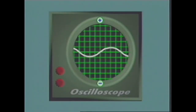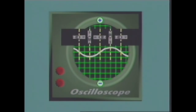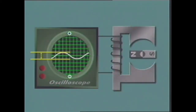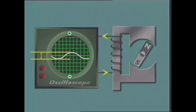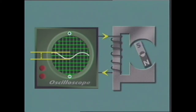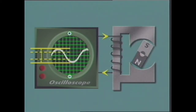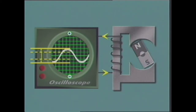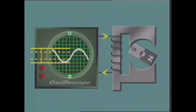An alternating current waveform can be shown graphically. This is the waveform of one cycle, that is, one complete revolution of the magnet. It plots changes in EMF against the rotation of the magnet. The value of the induced EMF depends on the strength of the magnetic field. Increasing the strength of the magnetic field increases the value of the induced EMF.